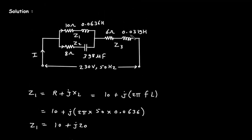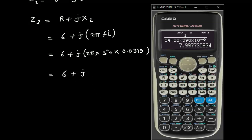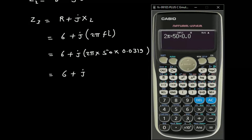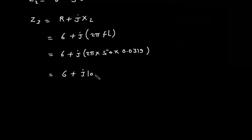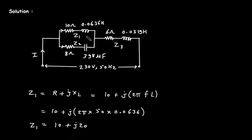The value for L is 0.0319. So Z3 = 6 + j·(2π × 50 × 0.0319), which gives approximately 10.02, so we write 10. Therefore Z3 = 6 + j10.